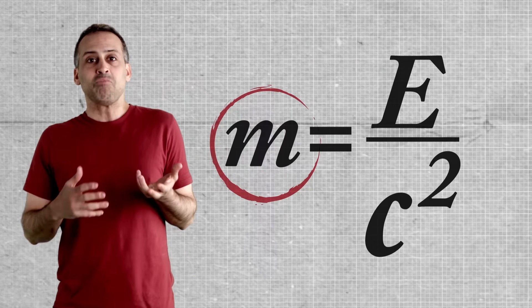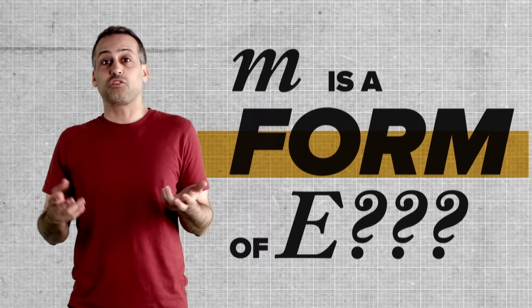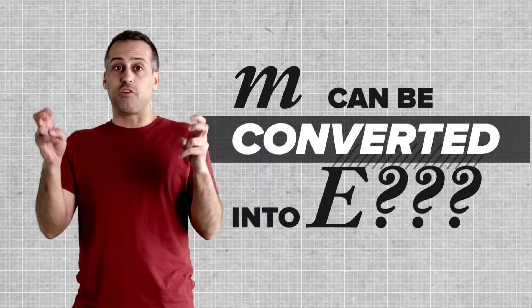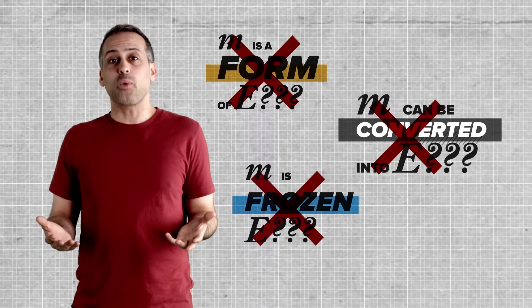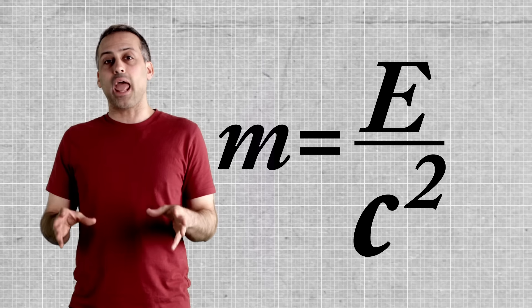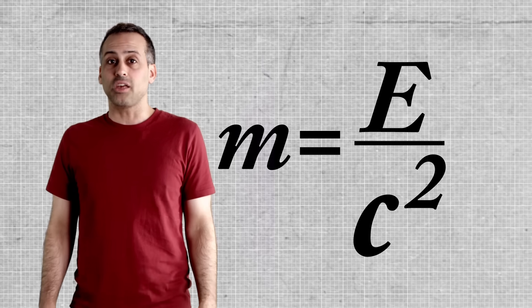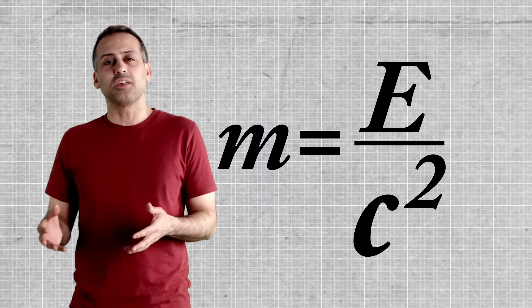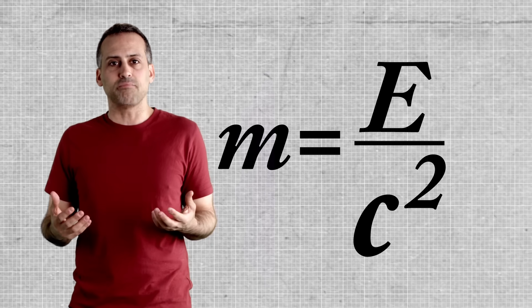You'll often see statements like mass is a form of energy, or mass is frozen energy, or mass can be converted to energy. That's the worst one. Unfortunately, none of these statements is quite correct. So trying to make sense of them can be frustrating. I think instead we can get a better sense of what m equals E over c squared means if we start with some things that it implies that seem at odds with our everyday experience of mass.